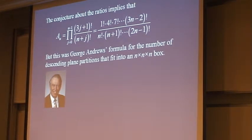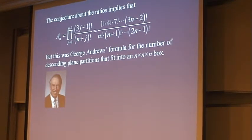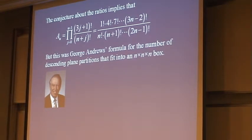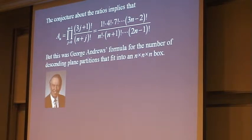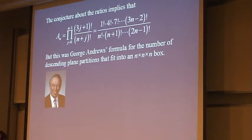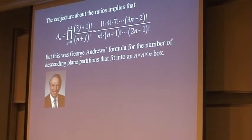Mills, Robbins, and Rumsey wrote to Richard Stanley with their formula. Richard pointed out that George Andrews had just recently found exactly this formula for counting something different — something called descending plane partitions that fit inside an n-by-n-by-n box. And so Mills, Robbins, and Rumsey tried to find a one-to-one bijection between their alternating sign matrices and these descending plane partitions, and that is still an open problem.